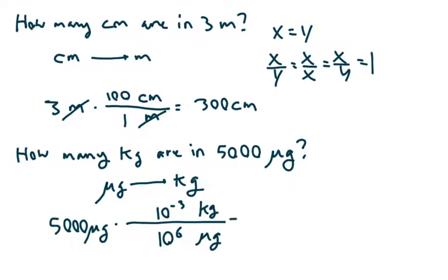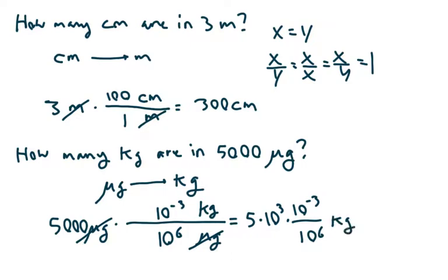Now we get practice doing conversions with scientific notation. We cross out our micrograms, and our final unit is kilograms. I'll put 5,000 in scientific notation: that's 5 times 10 to the third. Then we have times 10 to the negative third divided by 10 to the sixth. This is now in kilograms. Remember 5 times 10 to the third is on the top, so this equals 5 times 10 to the power of 3 plus (negative 3) minus 6, which gives us 5 times 10 to the negative sixth kilograms.